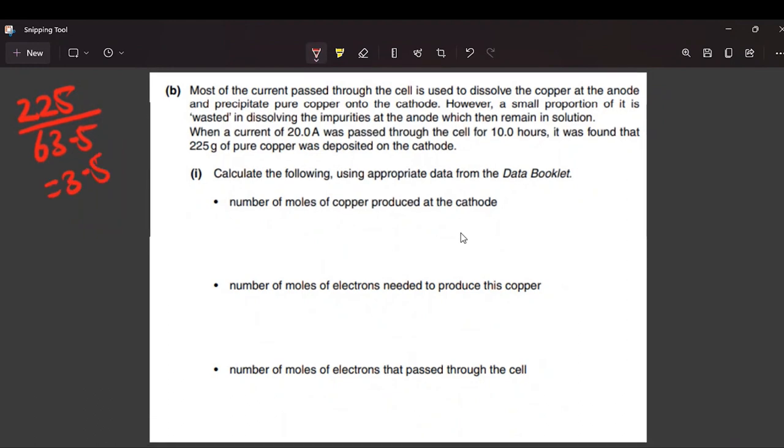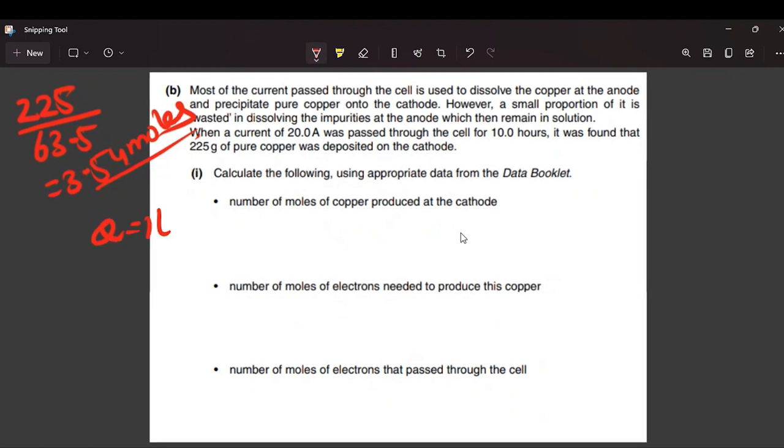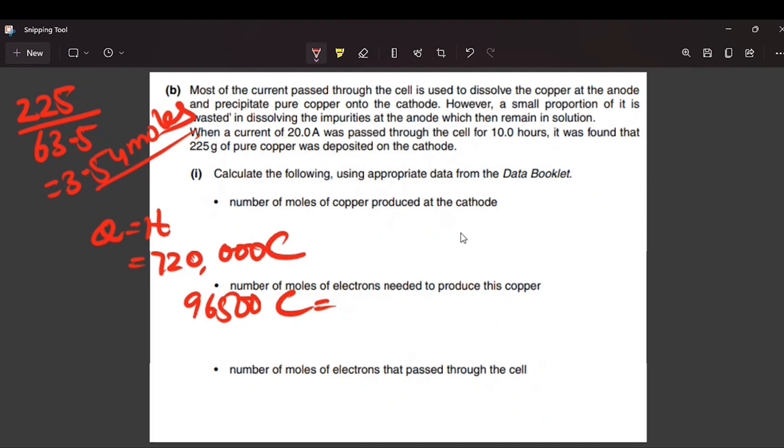The same question for electrochemistry. Q is equal to it, where Q is charge, 96,500 coulombs equals 1 mole of electrons.